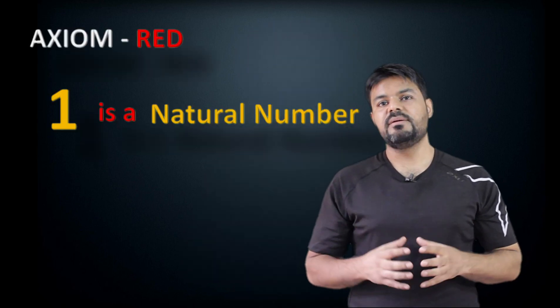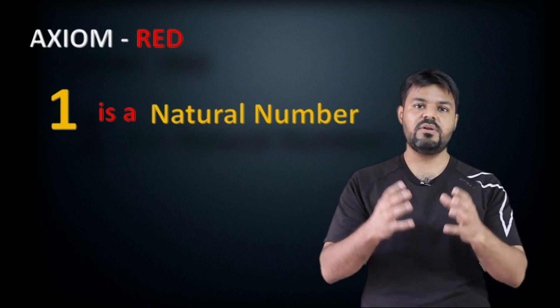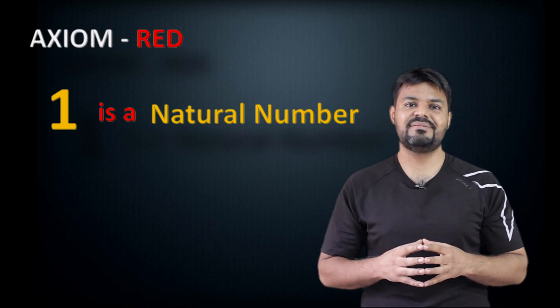Our first axiom is Axiom Red. We cannot call it the first axiom because we have not yet defined what numbers are. Axiom Red states that one is a natural number. We don't yet know what one actually is and what it does, but it is a natural number. In mathematics today it seems more logical to start from zero, but I will start from one — the concept of one comes naturally to us, whereas the concept of zero is more abstract. It is still a matter of notational convention, and you can alter these axioms to start from zero if you want.